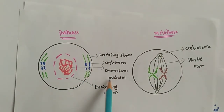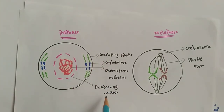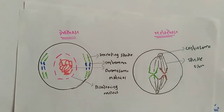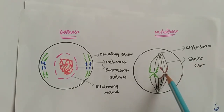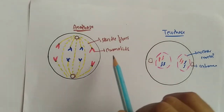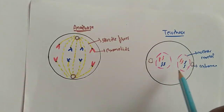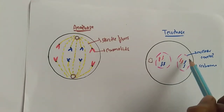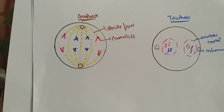In prophase, chromosome material condenses, the centromere develops, spindle fibers form, and the nuclear envelope disappears. In metaphase, chromosomes are situated at the equator with spindle fibers attached. In anaphase, chromatids move to opposite poles. In telophase, two daughter nuclei form and a new nuclear envelope develops. Thank you for watching — please subscribe.